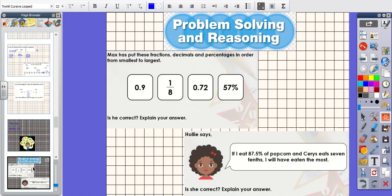Problem solving and reasoning today. Max has put these fractions, decimals, and percentages in order from smallest to largest: 0.9, 1/8, 0.72, and 57%. Is he correct? Explain your answer. I'm going to convert all of mine into percentages. So 0.72 is 72 hundredths, which equals 72%. So I can already see that smallest to largest, that that is larger than that. So I can already see that he's made a mistake straight away. So 0.9 is 9 tenths, which is the same as 90 hundredths, which is the same as 90%.